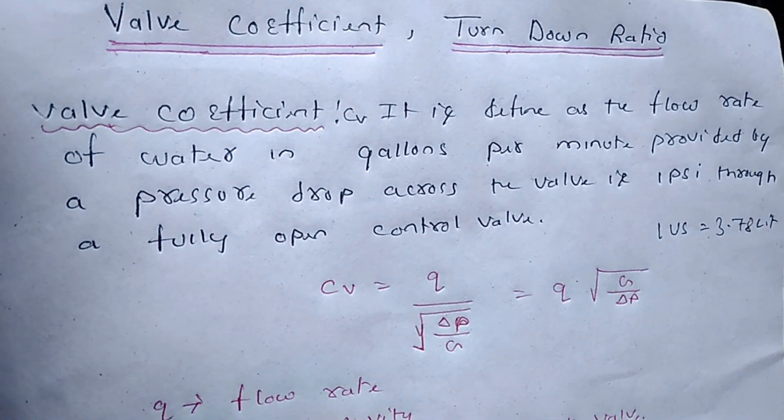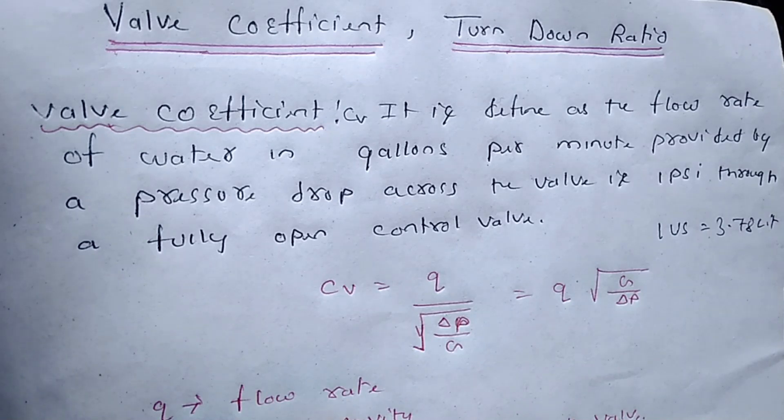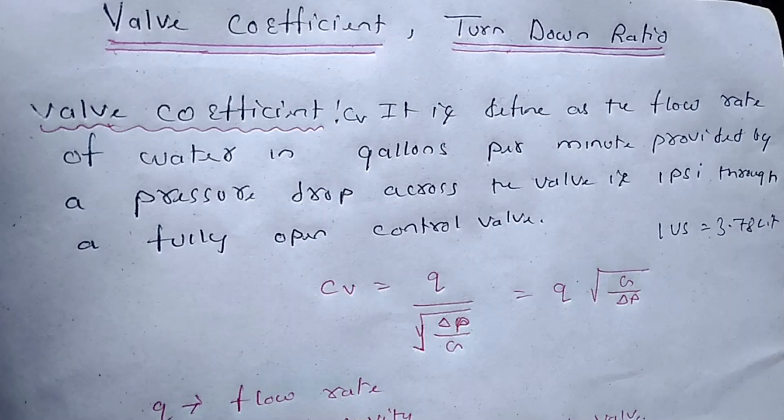So the number of U.S. gallons of water at 60 degrees per minute that flow through the valve with a specified opening, that is usually wide opening, and pressure drop across the valve is 1 psi. So this is valve coefficient.